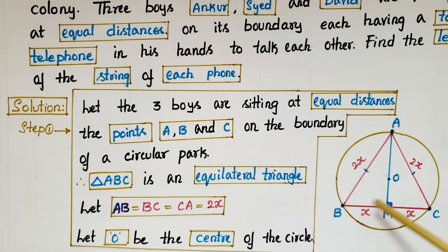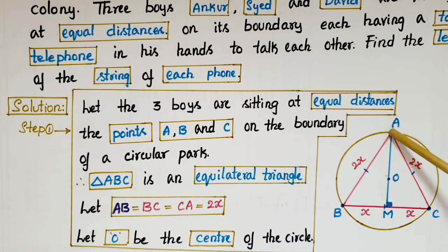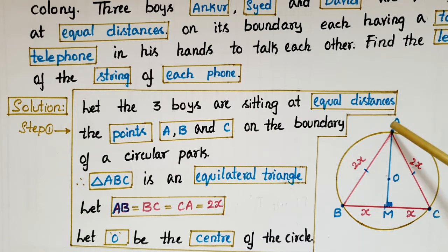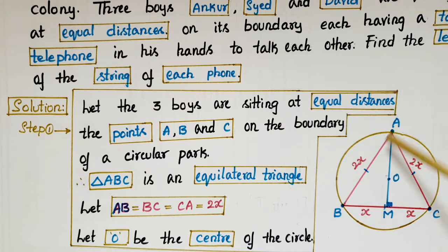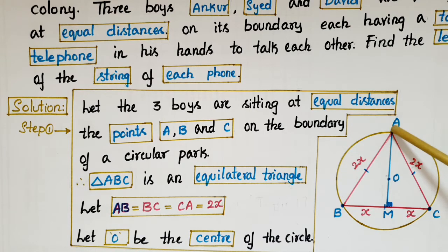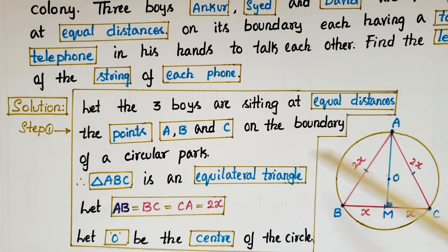The boys are sitting at equal distances on the circular boundary, so let the points be A, B, and C. They each have toy telephones, and the string lengths are AB, BC, and AC. These three string lengths form an equilateral triangle because they are sitting at equal distances, so AB = BC = AC. Let each side equal 2x.